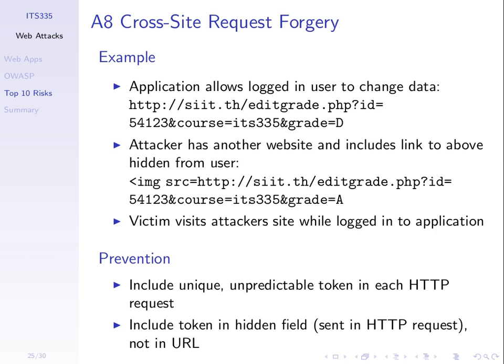We saw an example of cross-site request forgery. In our grading system, to edit grades the logged-in user could visit a URL that would change the grade of a student in course ITS 335 to D, for example. This page checks the cookie — not anyone can visit this URL. You need to be logged in for this URL to perform a grade update. If you're not logged in and try to visit this URL, it returns an error. If your cookie is appropriate, you can edit grades.